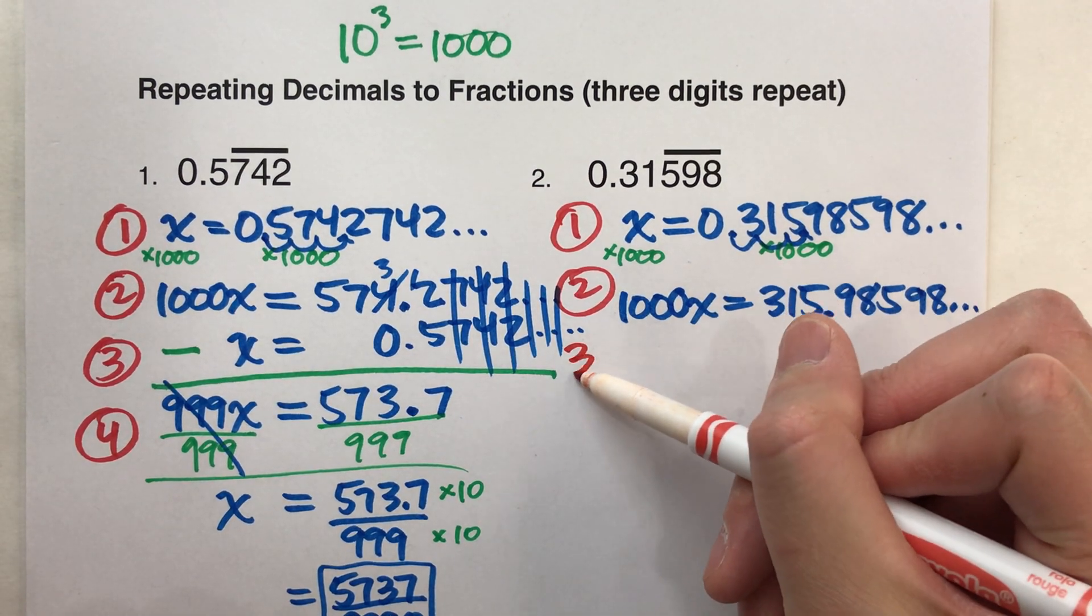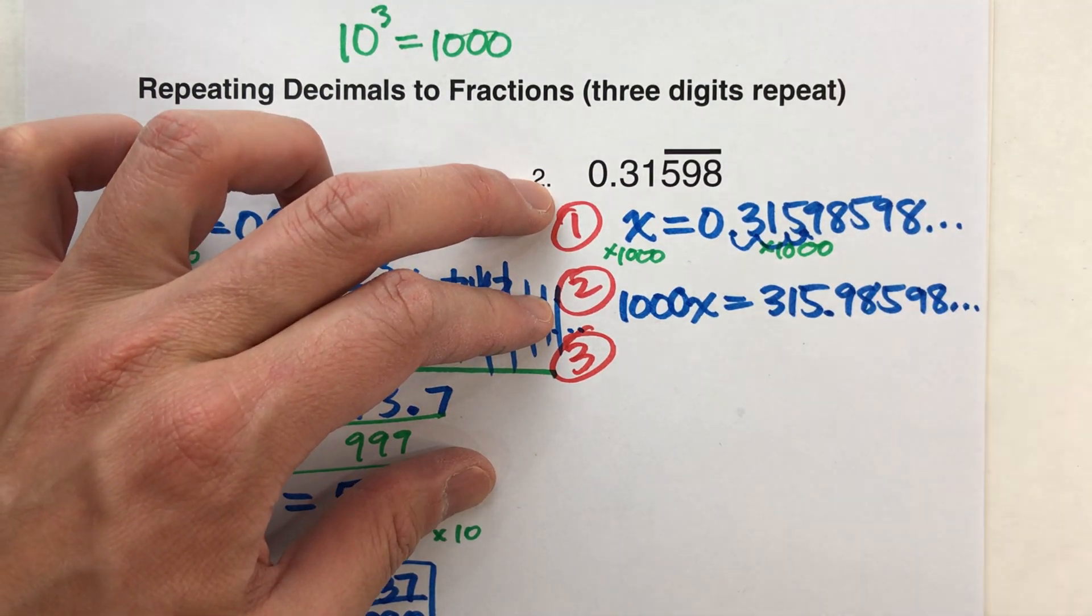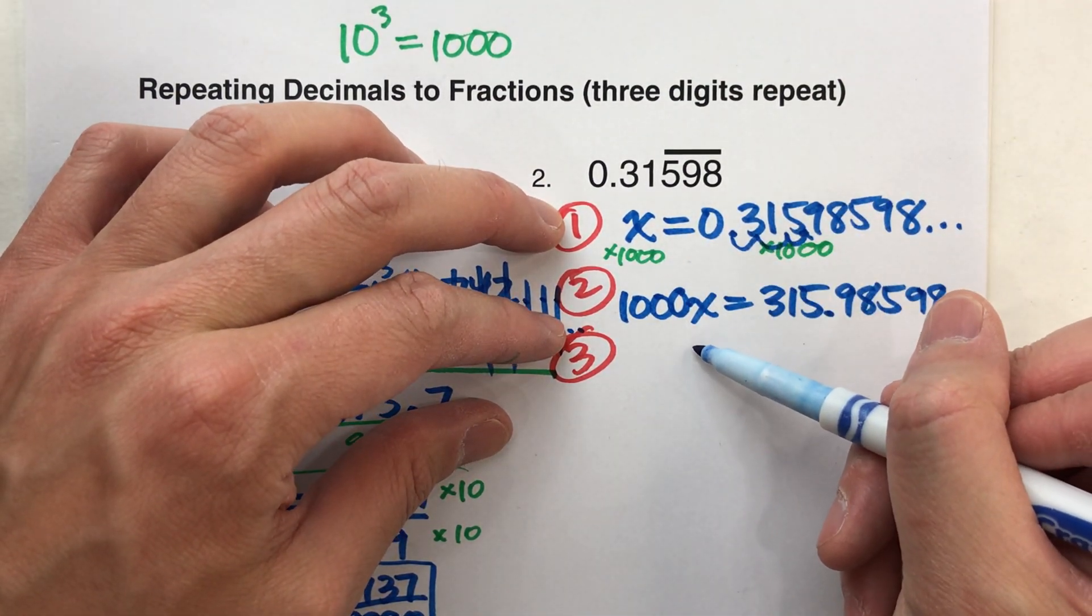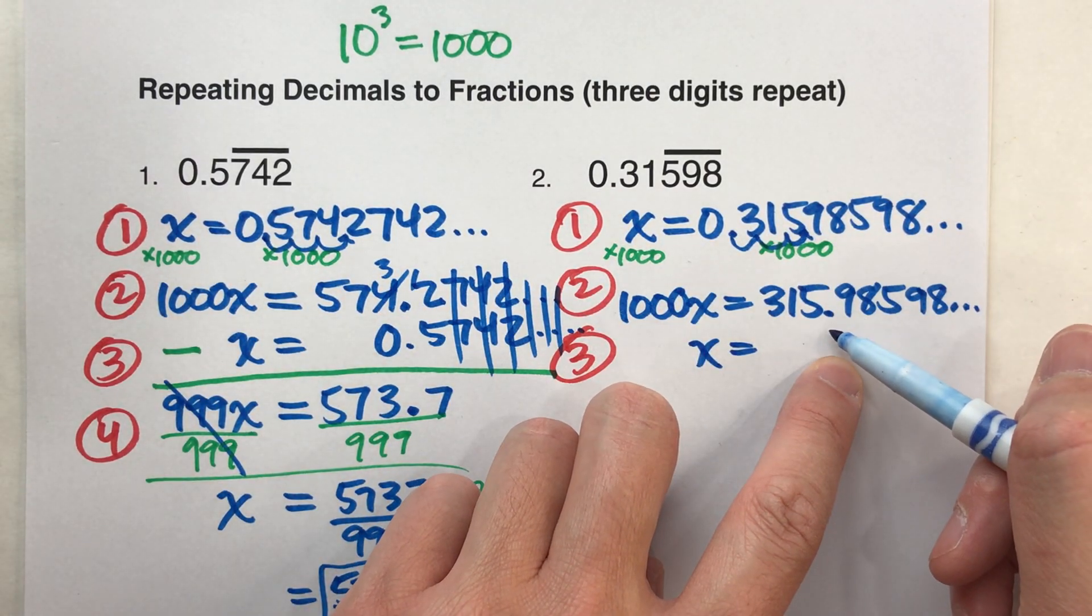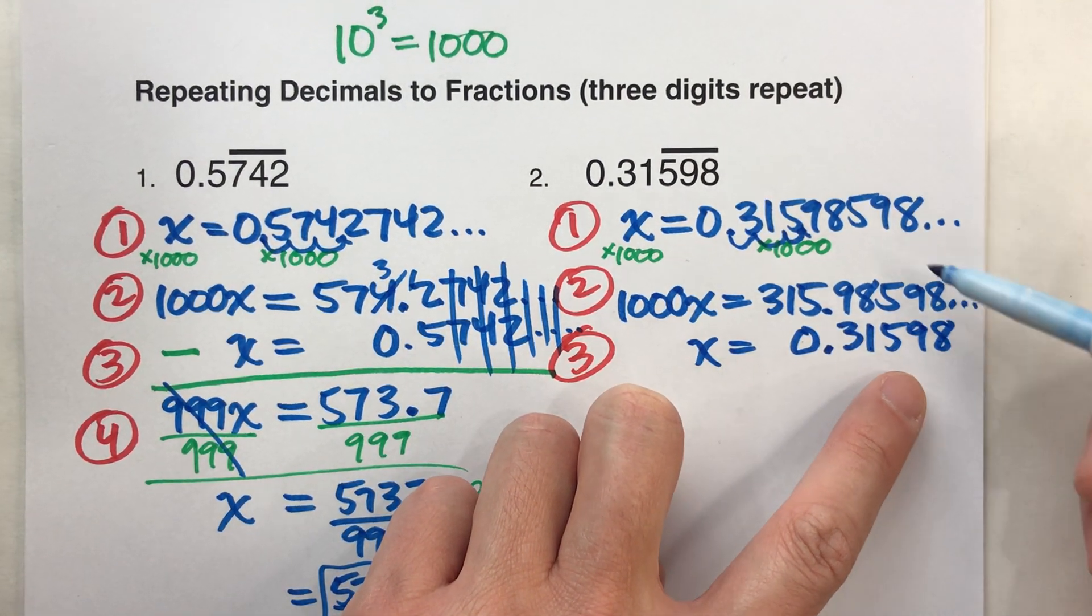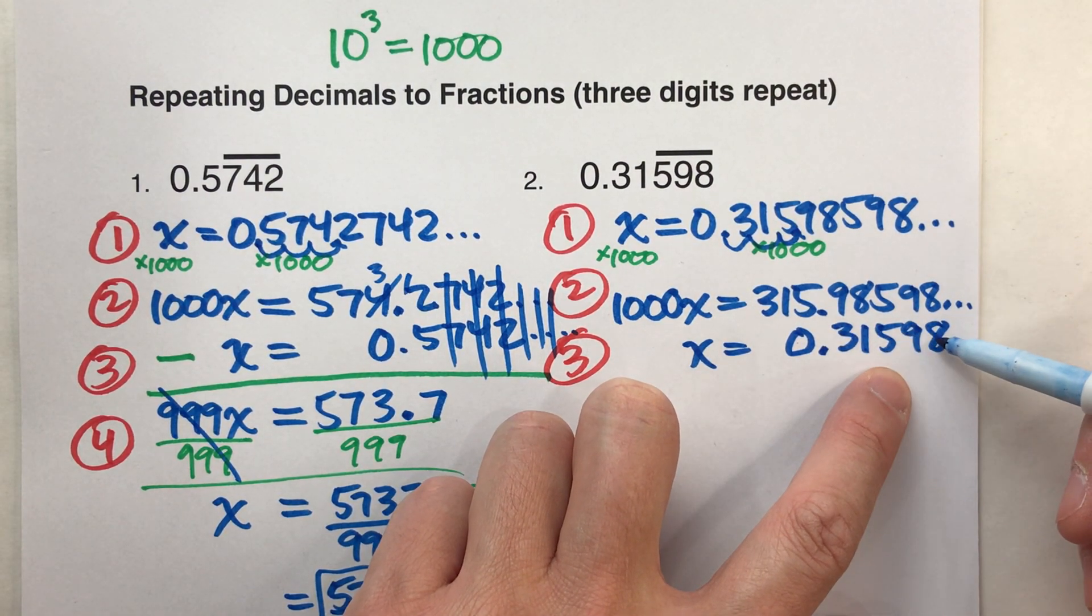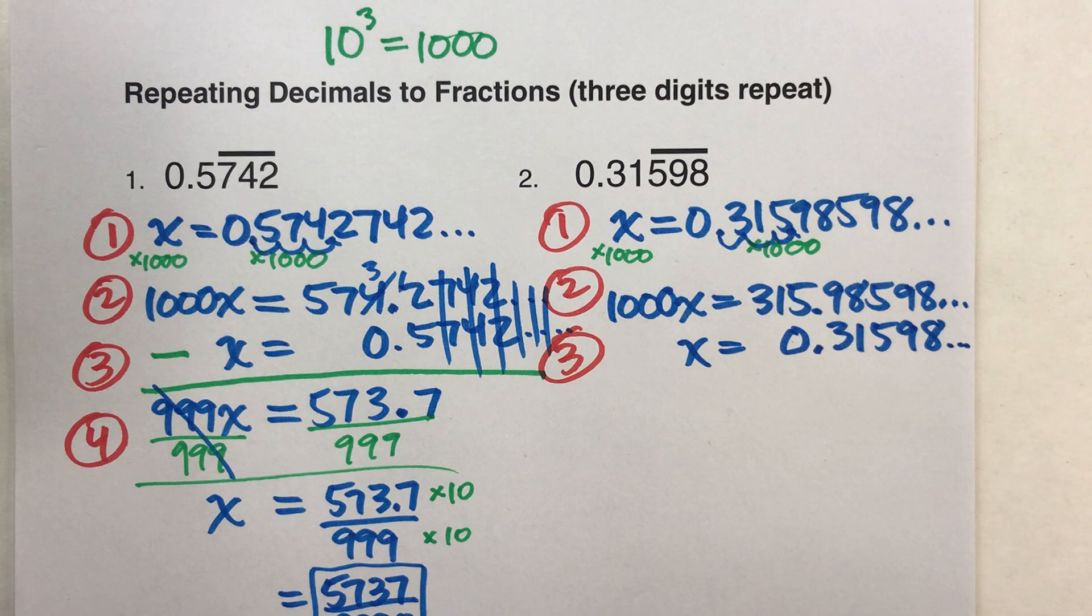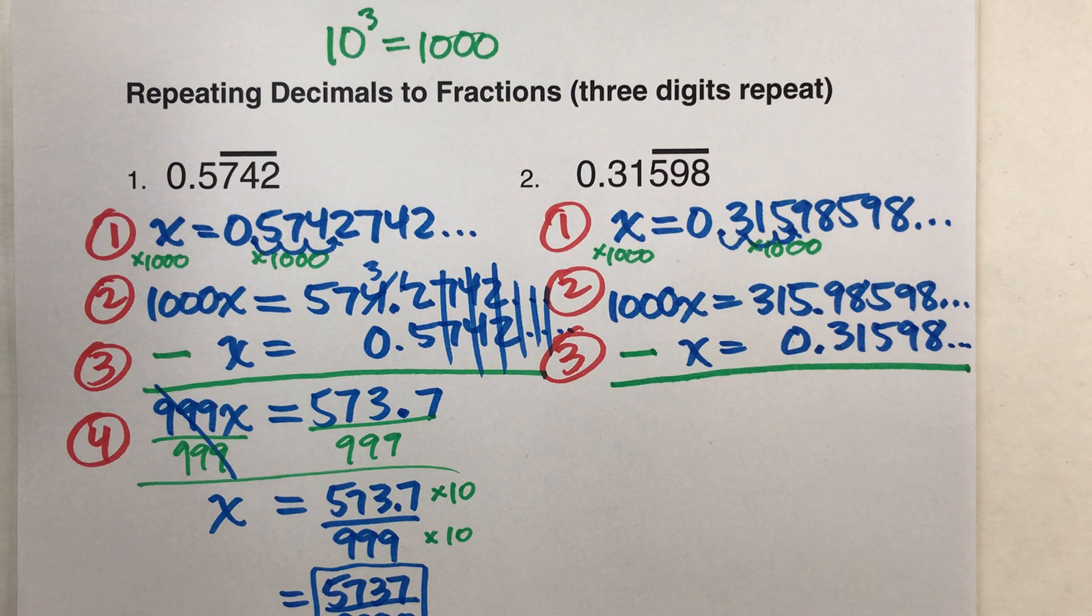Alright. We're ready for step three. Step three, take our new equation and subtract our original one from it, okay. So, I'm going to take the original one, I'm going to line things up when I write it underneath, there's my x, there's my equal. Cool. When I write this one, I'm going to line up the decimal, the decimal's way over here, so, 0.31598, and remember, 5, 9, 8 is repeating, so it's 0.31598, 5, 9, 8, 5, 9, 8, it'll be 5, 9, 8 forever after that, okay. So, I've written that out, remember we're subtracting, so I'll write the subtraction there.